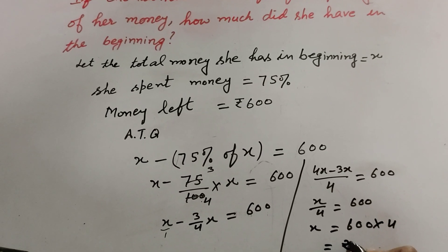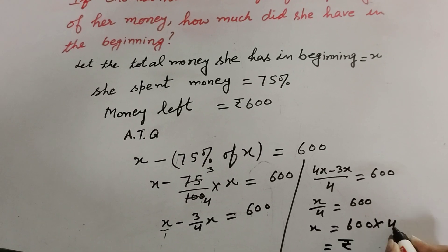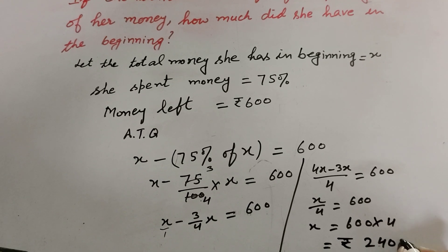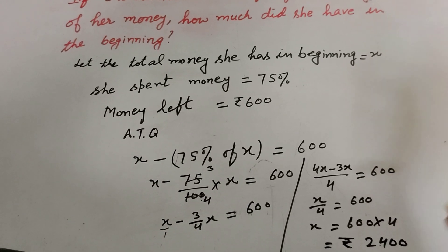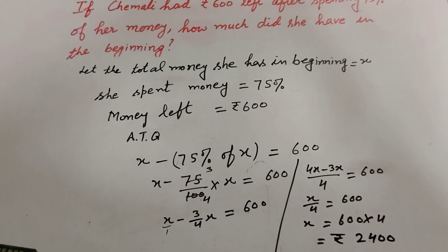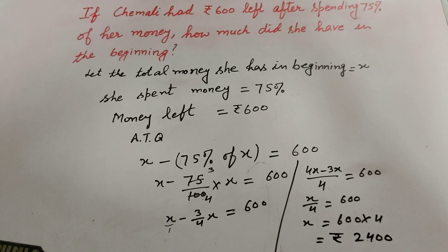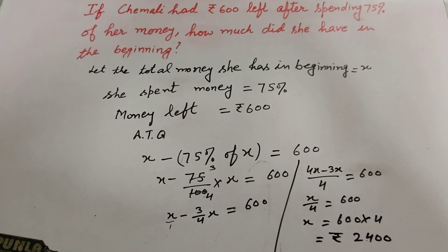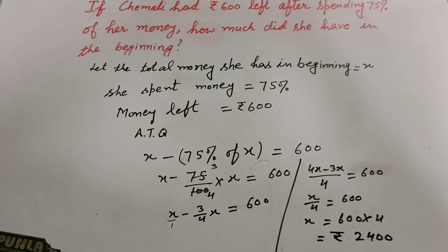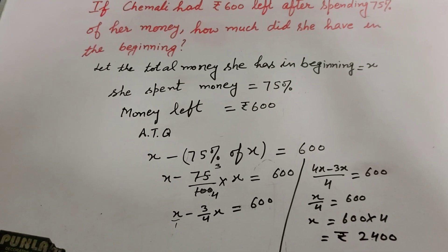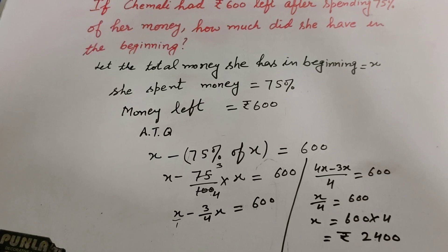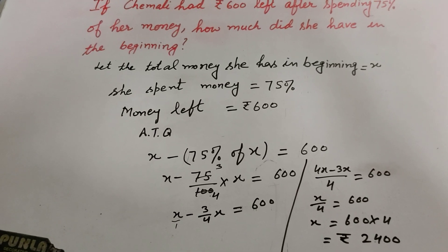So x equals 600 times 4, which is 2400. She had RP 2400 in the beginning. Thanks for watching — like, comment, share my video, and subscribe to my channel.